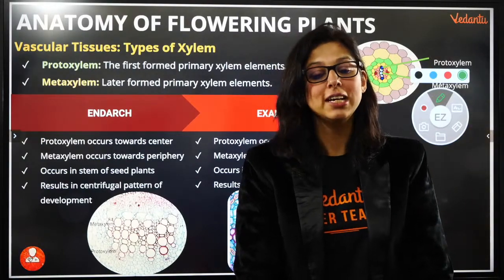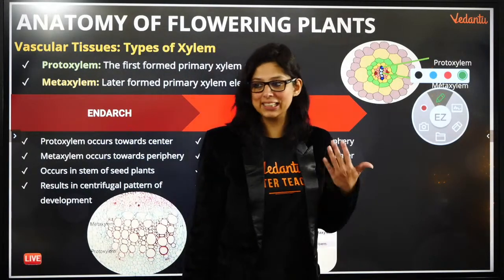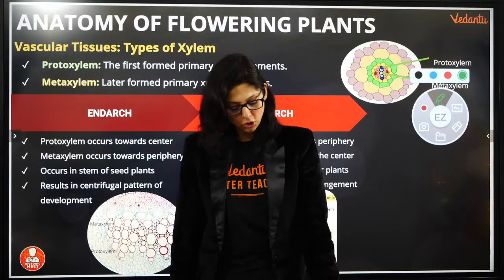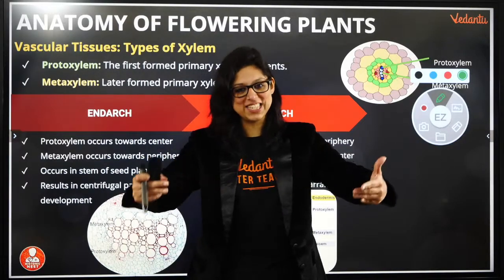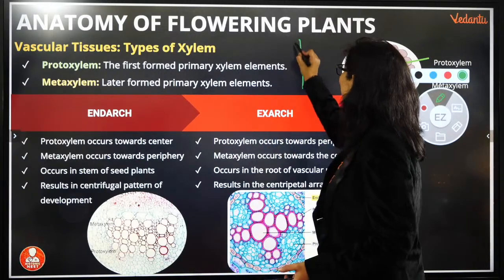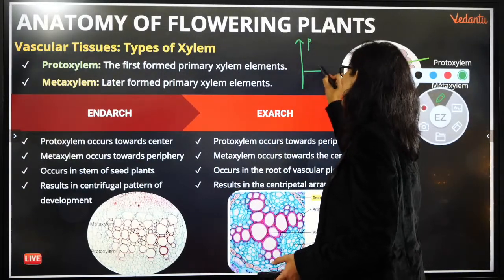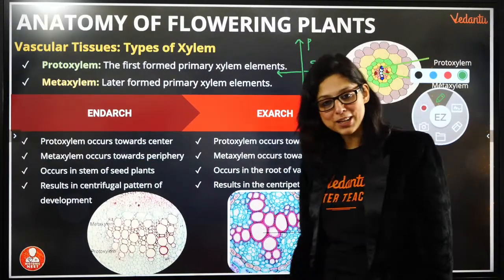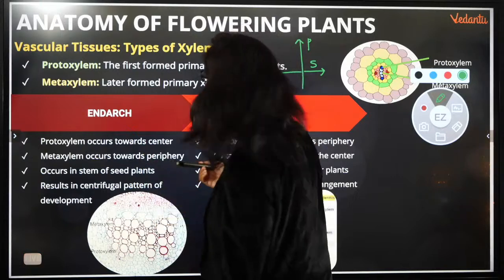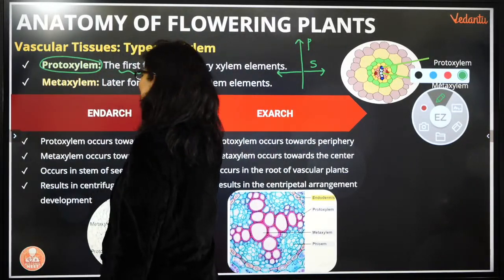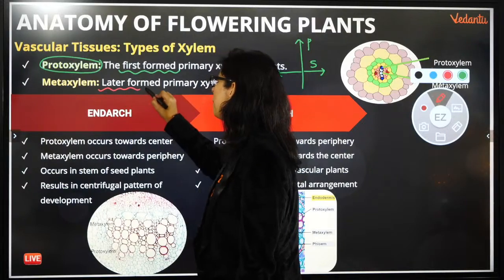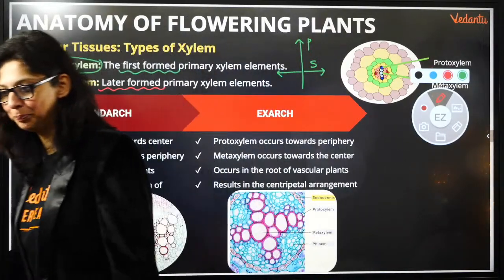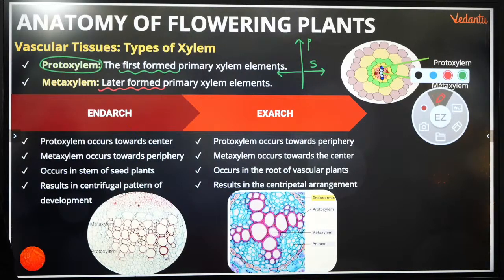The first growth that occurs — vertical growth — is primary growth. After some time, when secondary growth happens, diameter increases. For primary growth, the xylem that forms first is always referred to as proto-xylem. The xylem formed later during secondary growth is meta-xylem. Proto-xylem: first formed, primary growth. Meta-xylem: later formed, secondary growth.